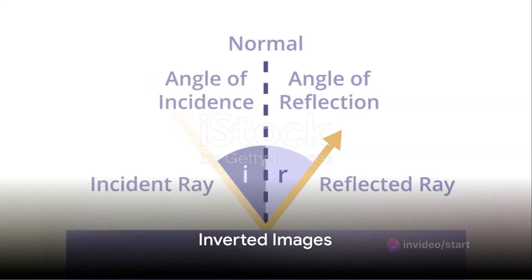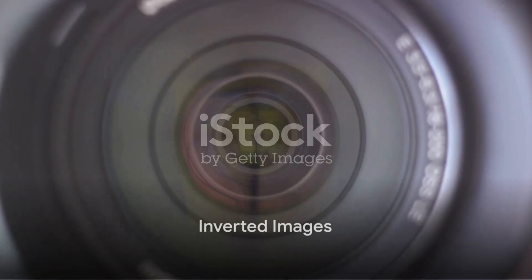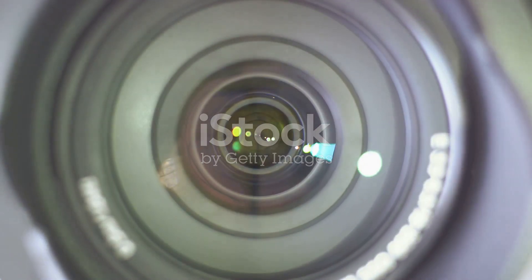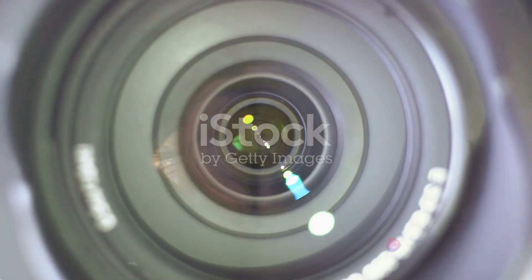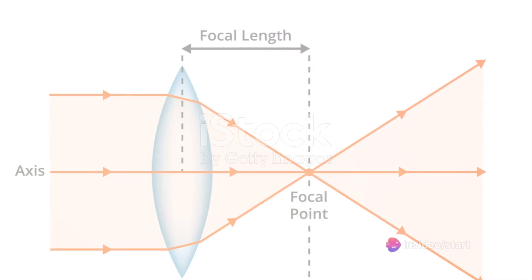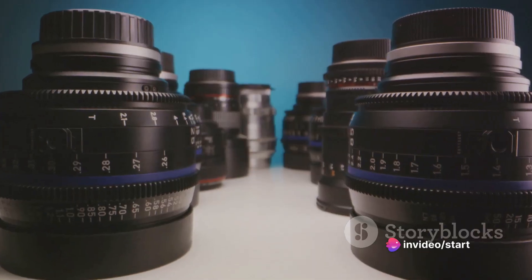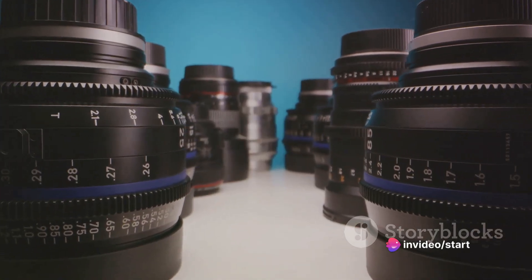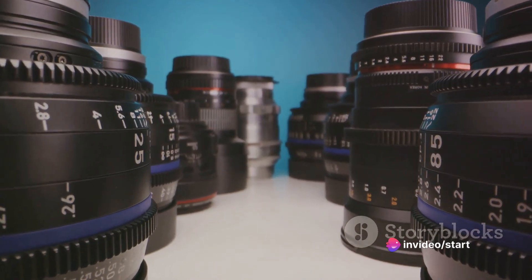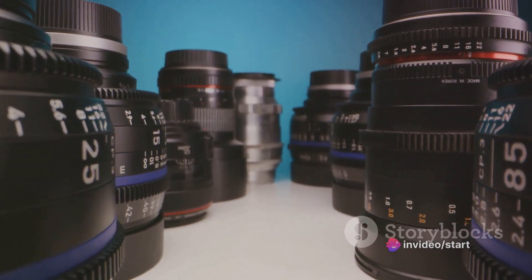Let's shift gears and talk about inverted images. Contrary to what the name suggests, inverted images aren't always upside down. They're simply the images formed when light rays appear to come from a point, but don't actually do so. Think of a mirror — when you look at your reflection, it seems like the light is coming from an object behind the mirror. That's an inverted image for you.